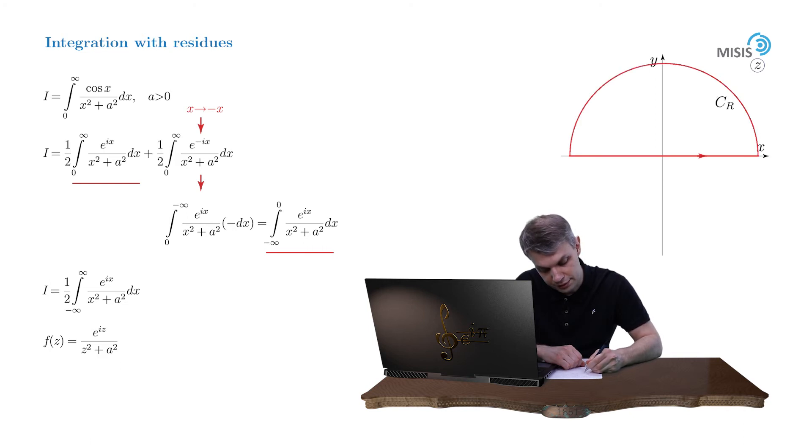And now we have a closed contour integral of f of z dz, which of course is decomposed into our original integral from minus infinity to plus infinity, plus the integral along the upper semicircle. And the integral along the upper semicircle vanishes due to Jordan's lemma.